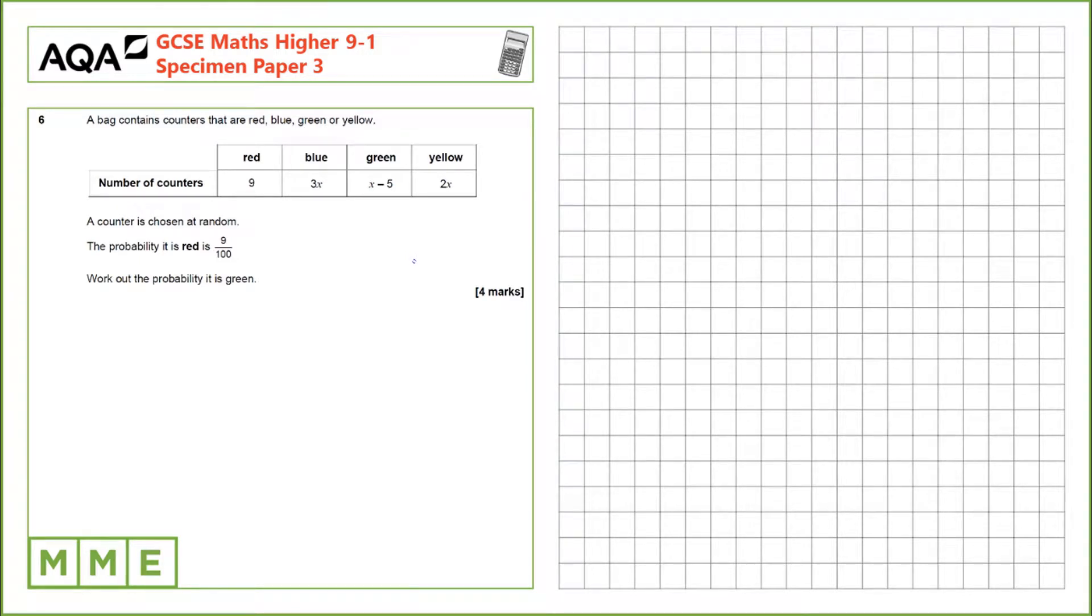Question 6. A bag contains counters that are red, blue, green or yellow. A counter is chosen at random. The probability that it is red is 9 over 100. Work out the probability that it is green.